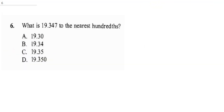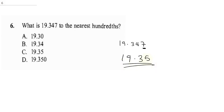Question 6 asks: what is 19.347 to the nearest hundredths? All you need to do is approximate this number. Since the digit in the thousandths place is 7, which is 5 and above, we round up to get 19.35. So the correct answer here is C.